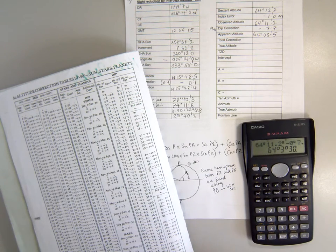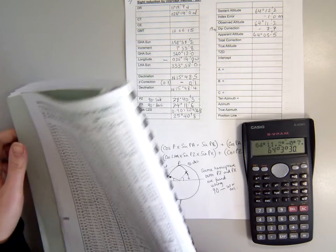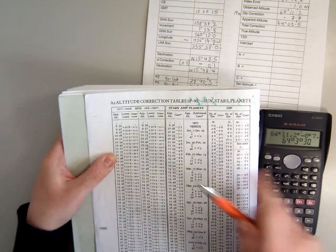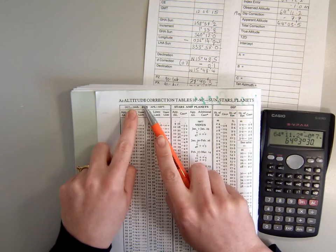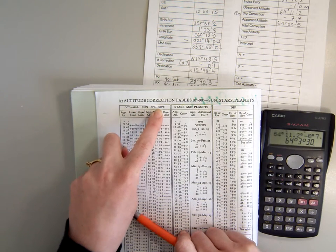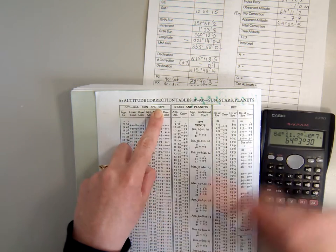We can then use that to look up a total correction, bearing in mind what we said about the seasonal ranges and the use of the correct limb for the Sun. This is a lower limb observation and our seasonal range, we're currently in August, so we're going to be looking at the April to September column this time.